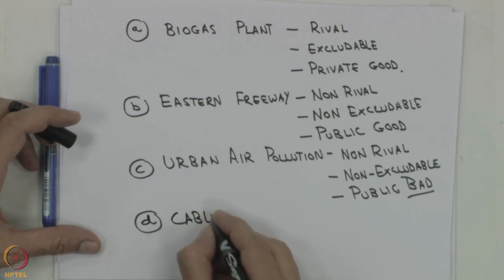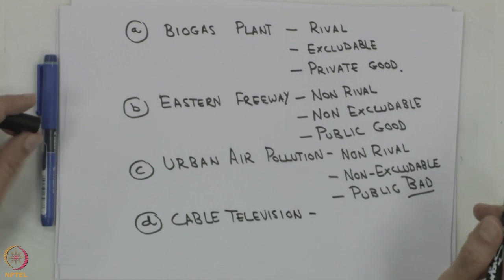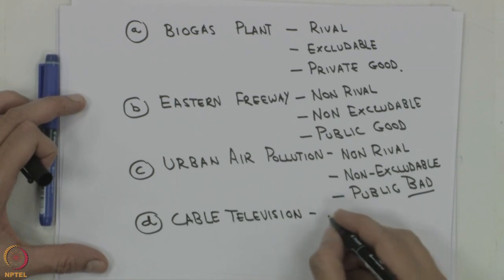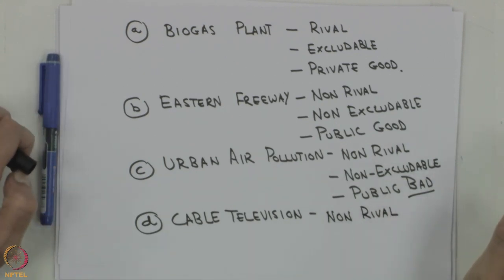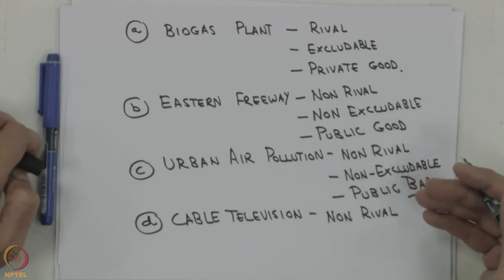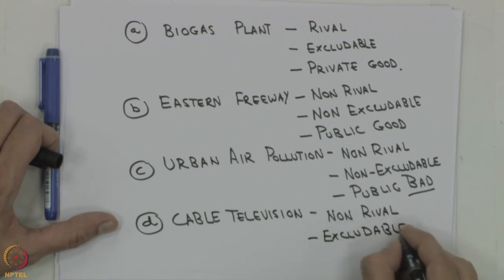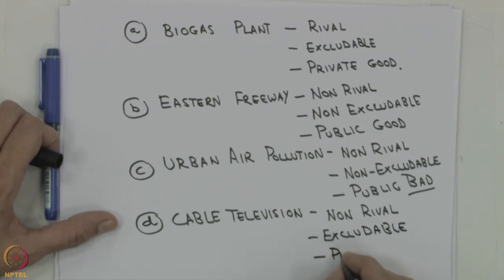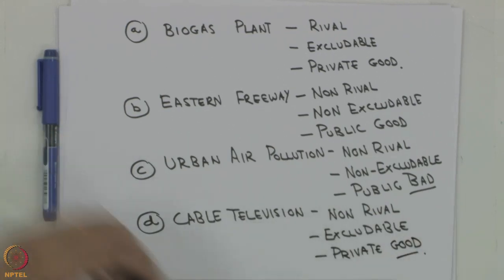Cable television is non-rival — watching cable TV does not affect someone else's ability to watch it, and depending on bandwidth there is no congestion. However, with set-top boxes, only if you pay the charge will you be able to get the channel, so it is excludable. Therefore, cable television is a private good even though it is non-rival.